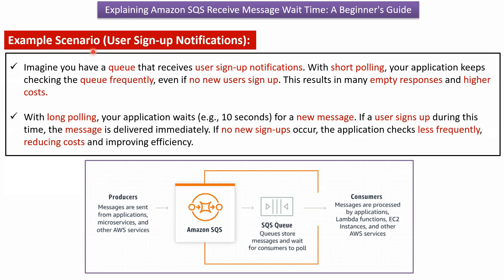Now we will see an example scenario: user signup notifications. Imagine you have a queue that receives user signup notifications. With short polling, your application keeps checking the queue frequently, even if no new users sign up. This results in many empty responses and higher cost.